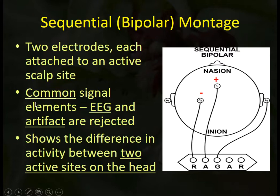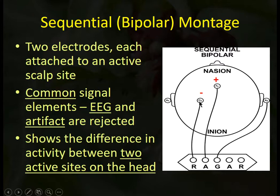Anything that's common to both inputs — whether it's 60 Hz artifact or real EEG such as an alpha rhythm — might look very similar at two close locations and therefore could be rejected in favor of more asynchronous patterns, such as those seen in the beta frequency bands.